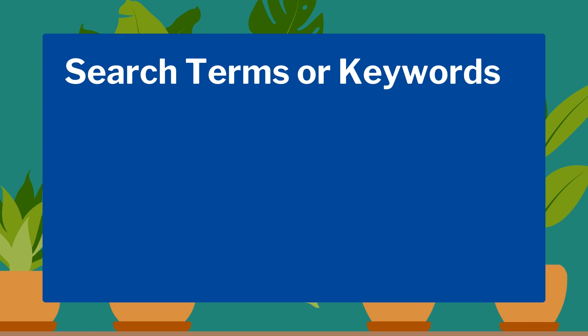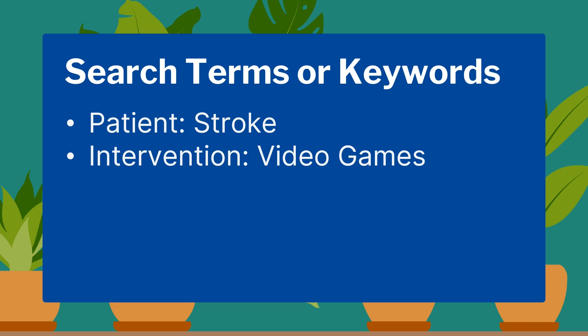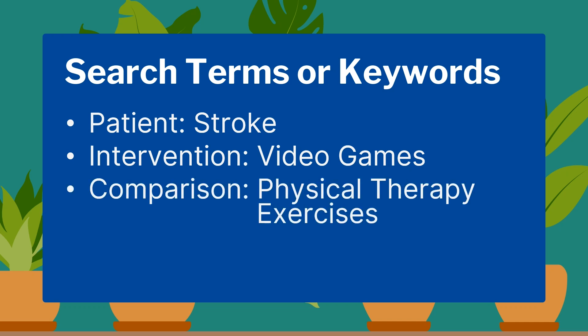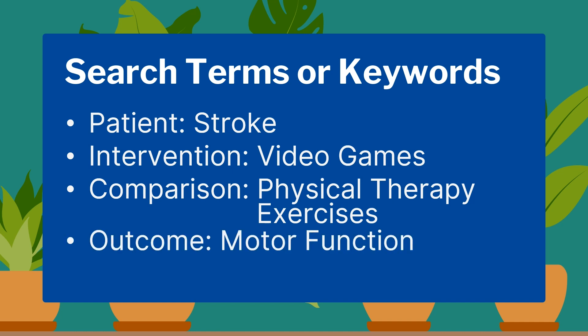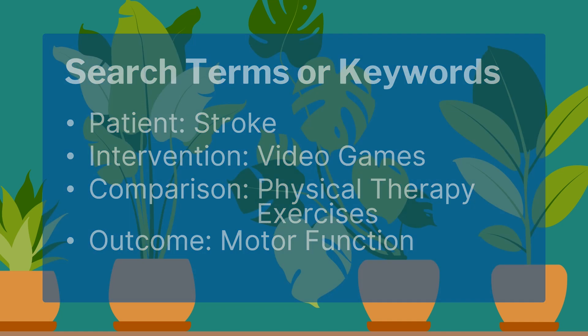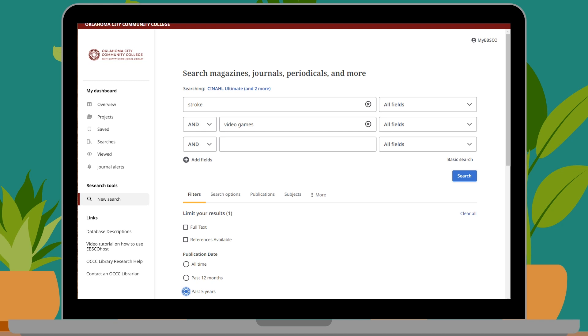Formats like PICO, for example, are great to get us started with brainstorming. We know our patient has experienced a stroke. We want to know if an intervention like video games could be beneficial to their recovery. We could try to compare this with the success rate of other physical therapy exercises, and we would want our patient to experience better motor function as an outcome. We can use these terms in different configurations to get different results from our databases. For this example, we will keep things simple and just use stroke and video games from our possible search terms to begin.